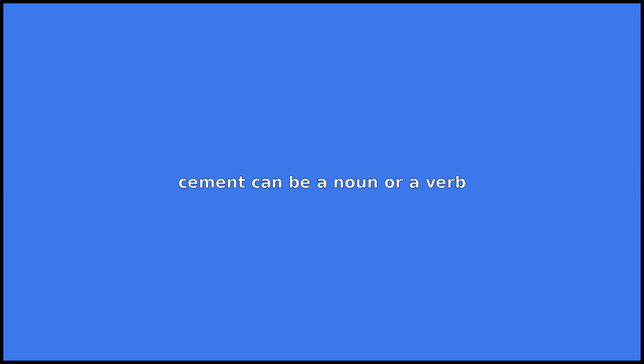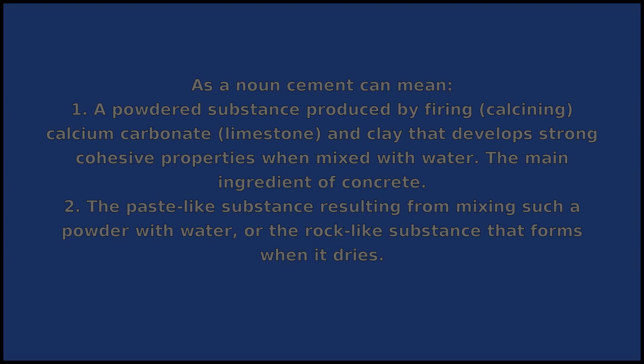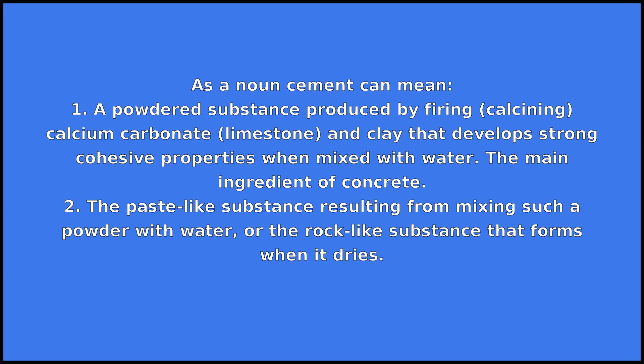Cement can be a noun or a verb. As a noun, cement can mean: 1. A powdered substance produced by firing and calcining calcium carbonate, limestone, and clay that develops strong cohesive properties when mixed with water — the main ingredient of concrete. 2. The paste-like substance resulting from mixing such a powder with water, or the rock-like substance that forms when it dries.